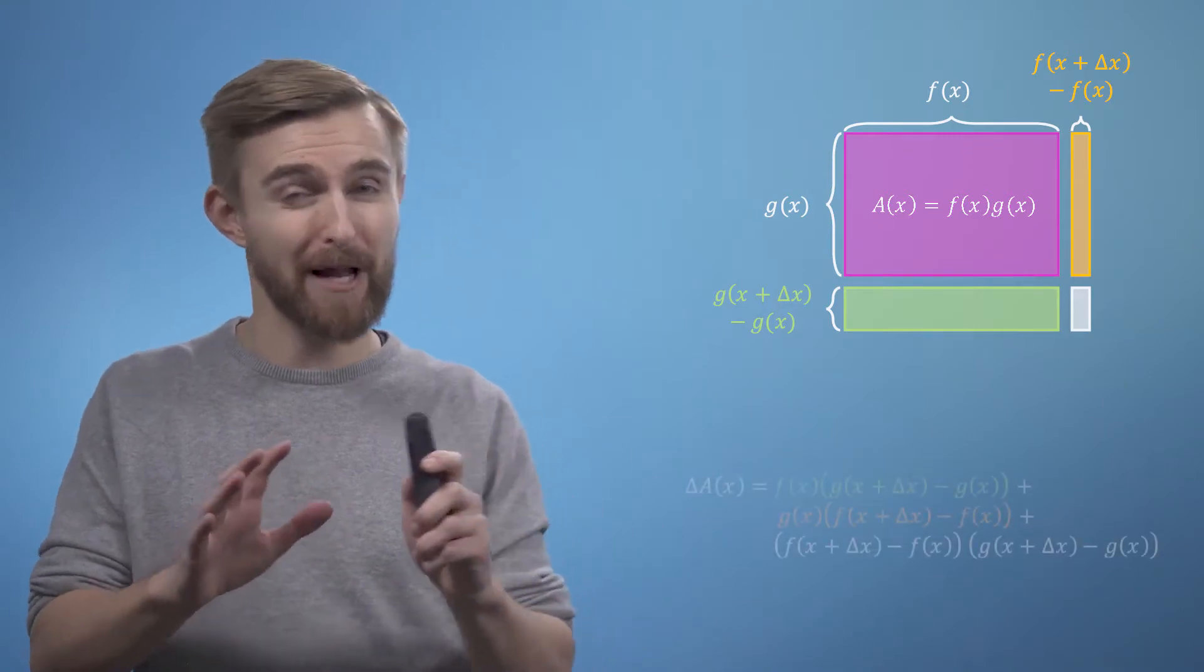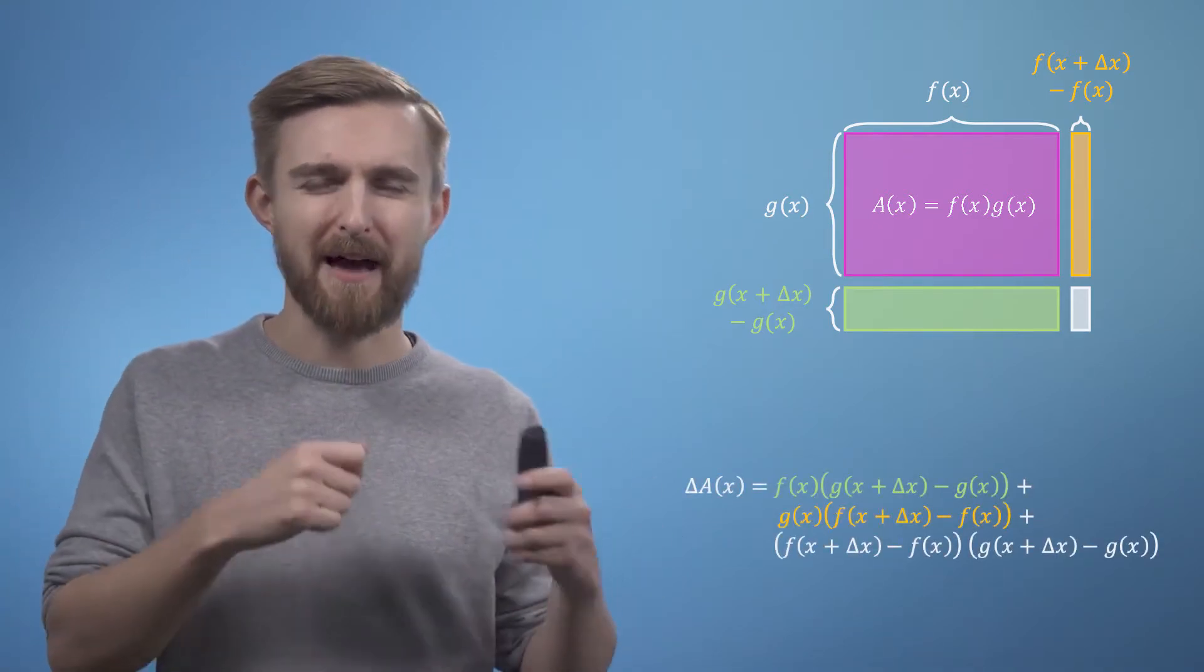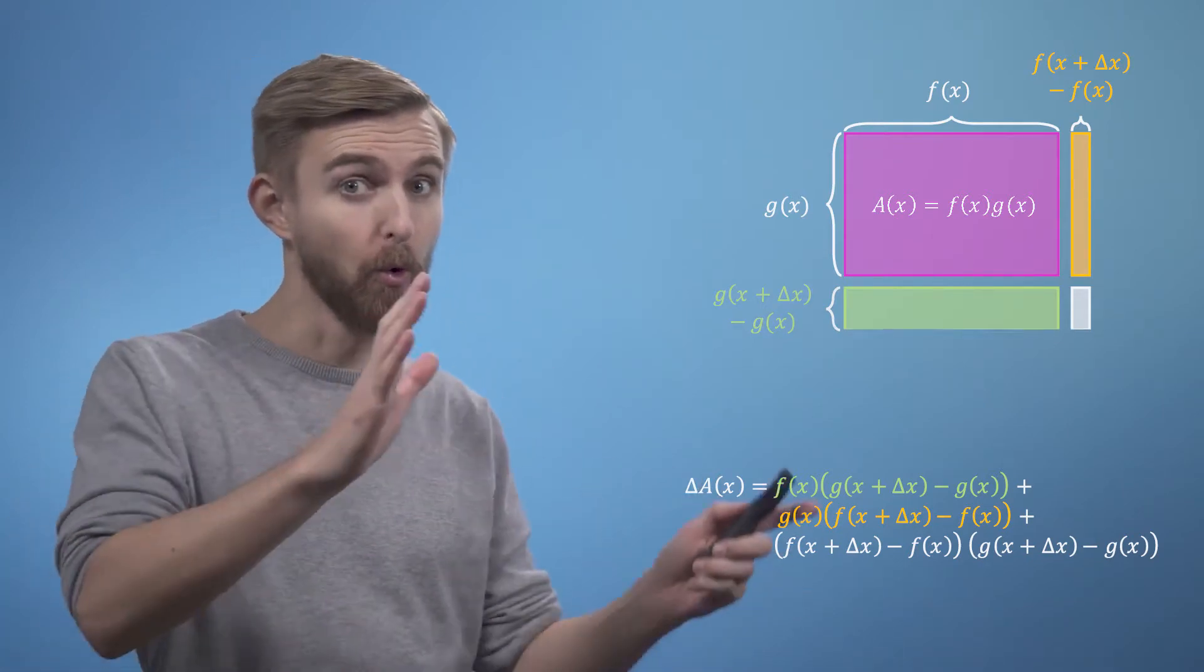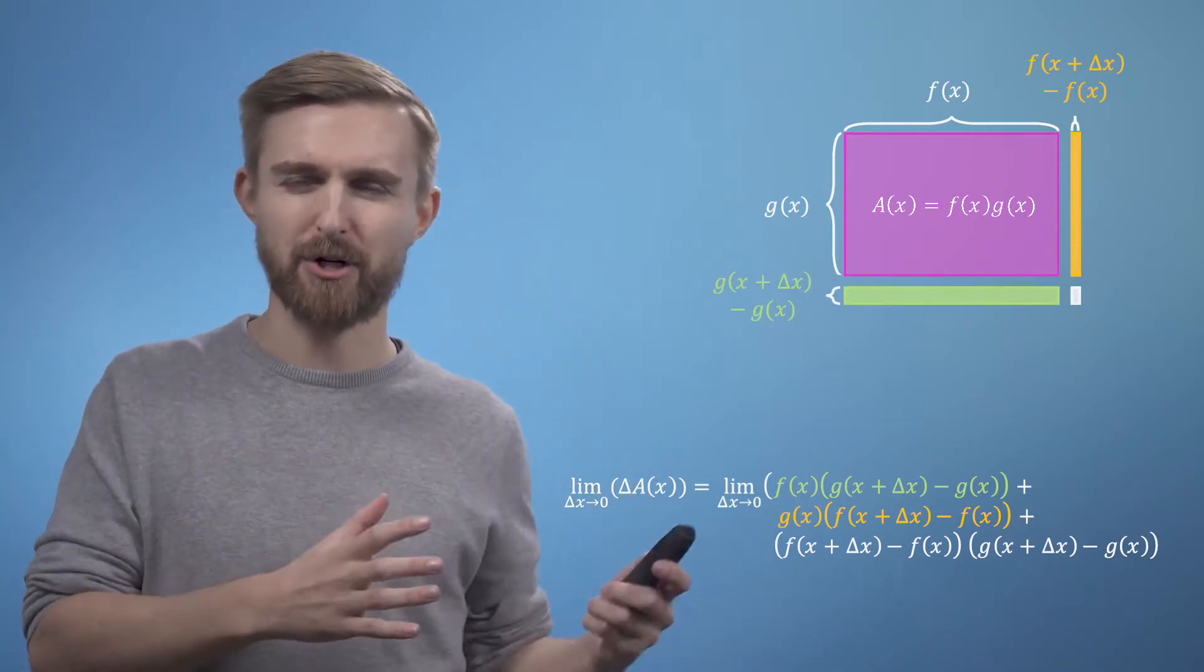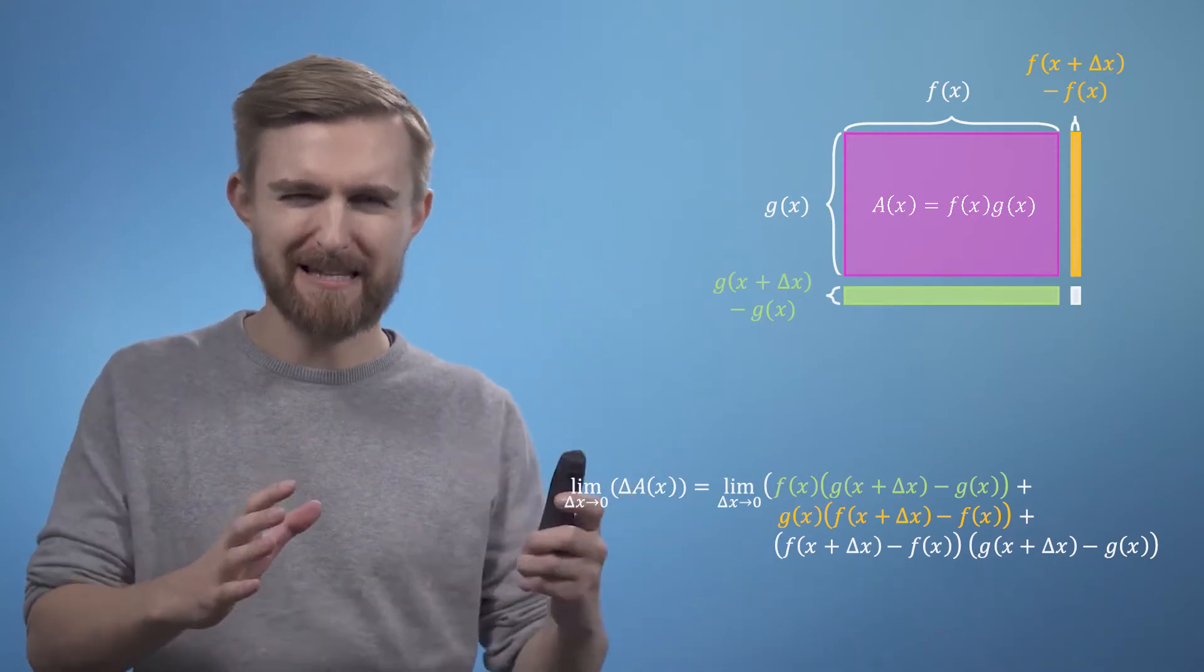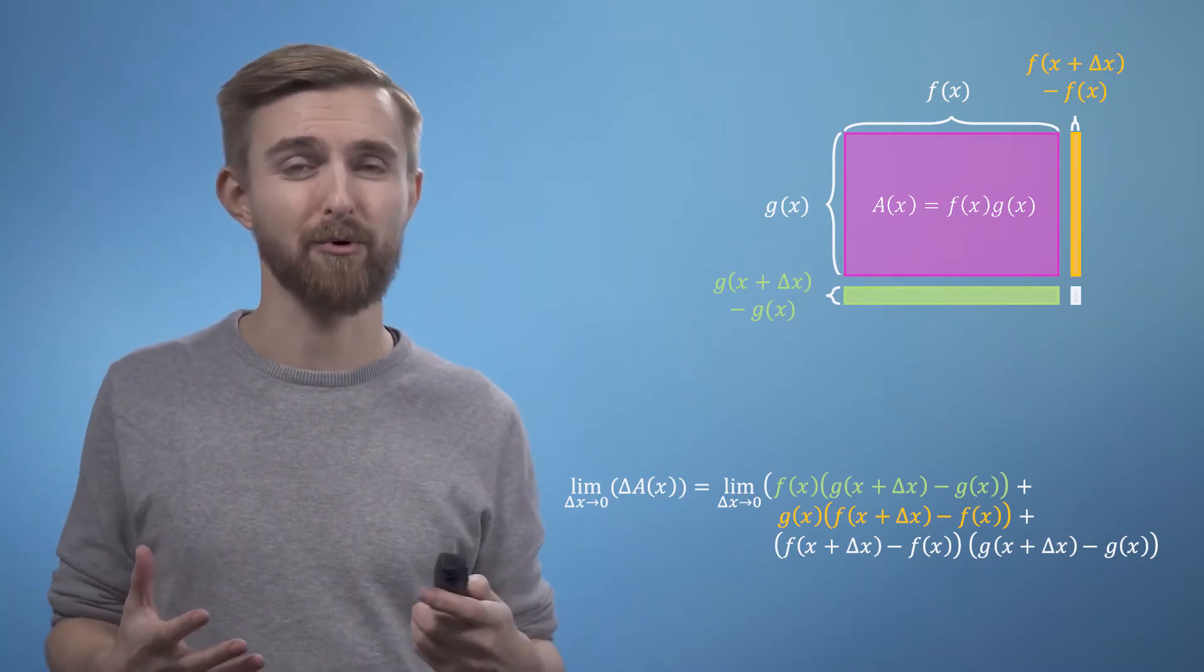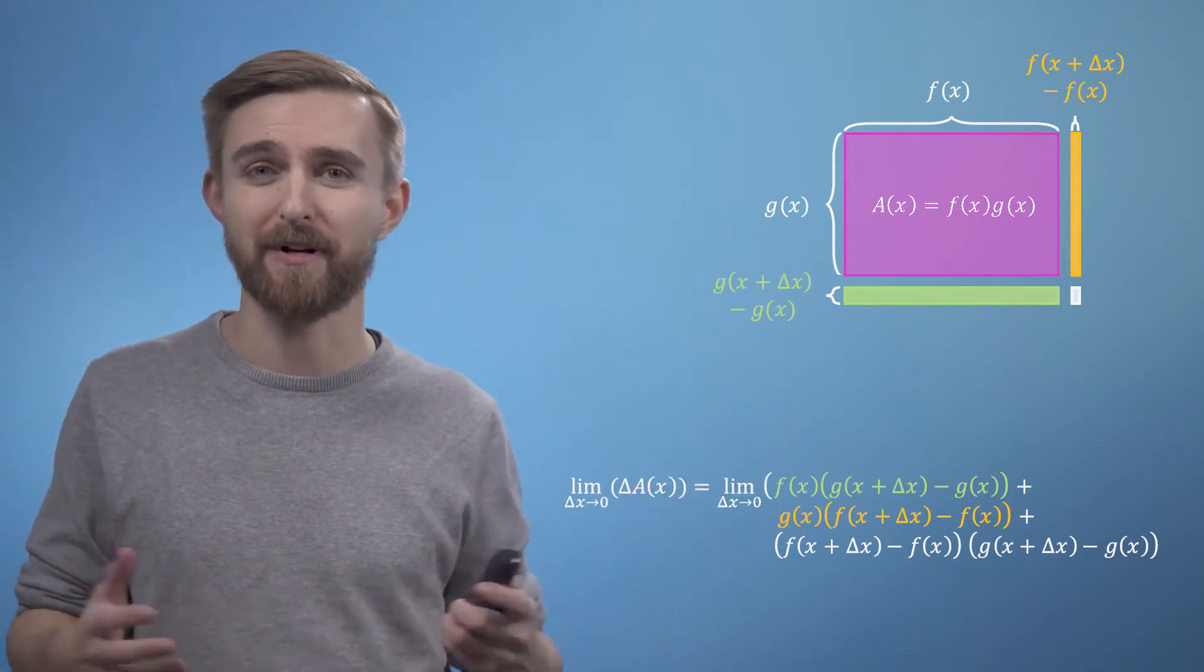I want to avoid a drawn out conversation about limits, but fundamentally I hope you can see that as delta x goes to zero, although all of the new rectangles will shrink, it's the smallest rectangle that is going to shrink the fastest. This is the intuition that justifies how we can ultimately ignore the small rectangle, and leave its contribution to the area out of our differential expression altogether.